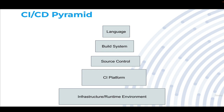At the bottom layer, you have your infrastructure or runtime environment — this is essentially the operating system on which you're going to be running all of your stuff. Specifically, you have your CI platform, the tool responsible for hosting your pipelines and orchestrating everything. The CI platform itself is going to have to work directly with your source control system, the place where your code lives. In order to take that source code and turn it into some type of binary or deliverable, you're going to have to use a build system.